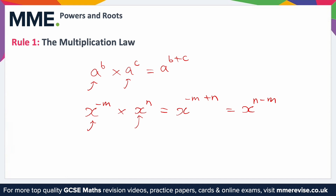As an example, you could have something like two cubed times two to the nine. You might be able to work this out — it'd be a pretty big number — but to make it easier, if we just want an order of magnitude, we do two to the power of three plus nine. Three plus nine is 12, so it's two to the power of 12.